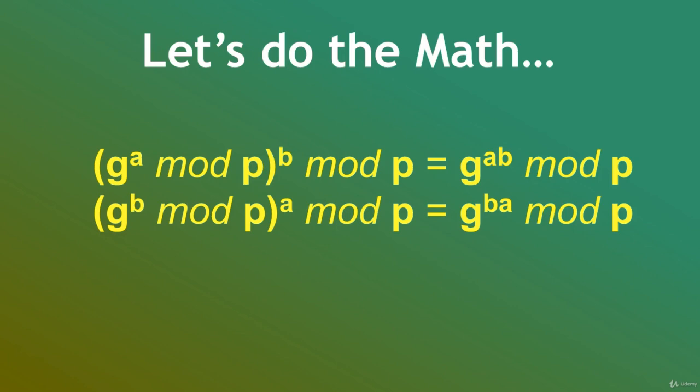Specifically, g to the a, modulo p, all raised to b, modulo p, equals g to the ab, modulo p. And g to the b, modulo p, all raised to the a, modulo p, equals g to the ba, modulo p.